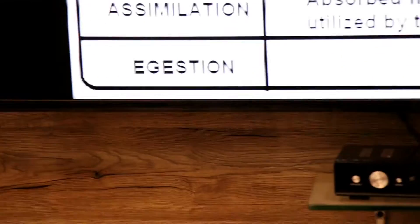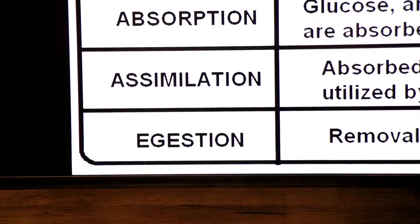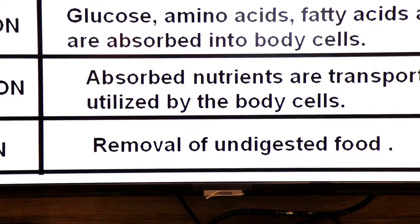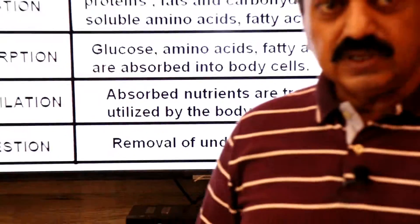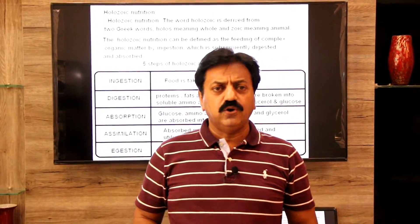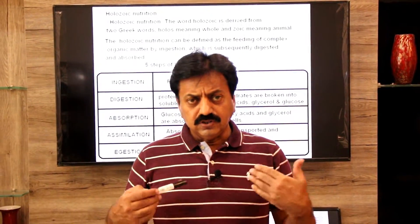Last step is egestion. What is egestion? Removal of undigested food is called egestion. So we have 5 steps in holozoic nutrition.